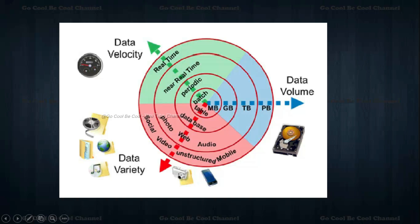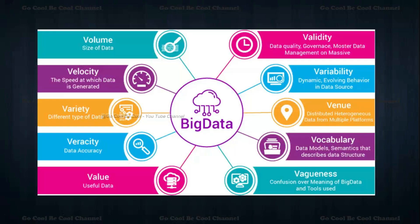In this picture we can see data volume on the right side — from MB, it moves to GB, terabytes, and petabytes. In the top left we can see data velocity — starting from batch, then periodic, then near real-time, and real-time. In the bottom left, the database talks about from table to database to photo, web, and audio — so many kinds of varieties. This is how the V's are illustrated.